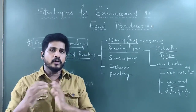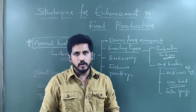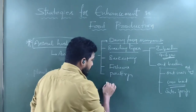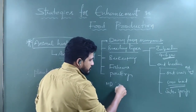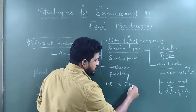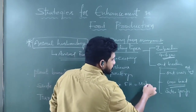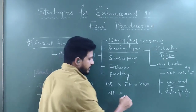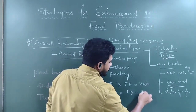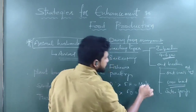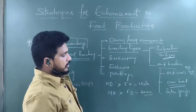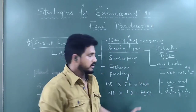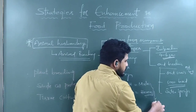Inter-specific hybridization involves mating animals of completely different species. For example, a male donkey mated with a female horse produces a mule, while a male horse mated with a female donkey produces a hinny. Both the mule and hinny are sterile.